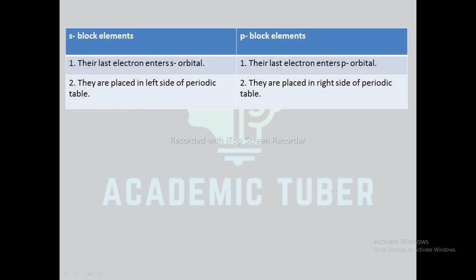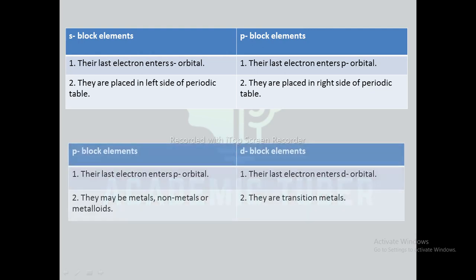Differences between s block and p block elements: in s block elements, the last electron enters the s orbital, whereas in p block elements, the last electron enters the p orbital. S block elements are placed on the left side of the periodic table whereas p block elements are placed on the right side. Differences between p block and d block: p block elements may be metals, non-metals, or metalloids, whereas d block elements are all transition metals.